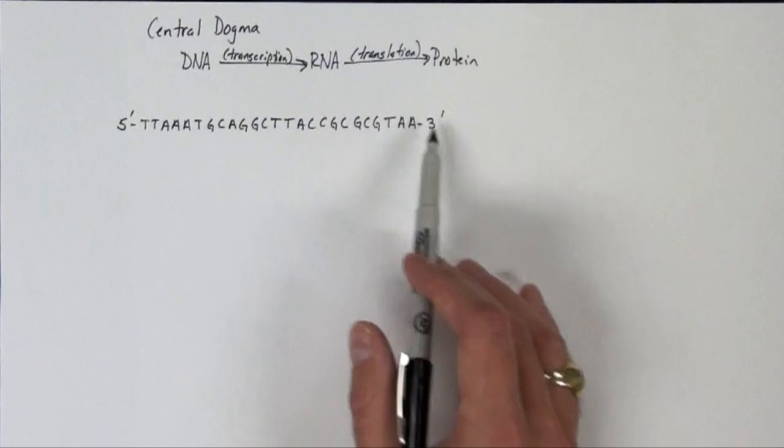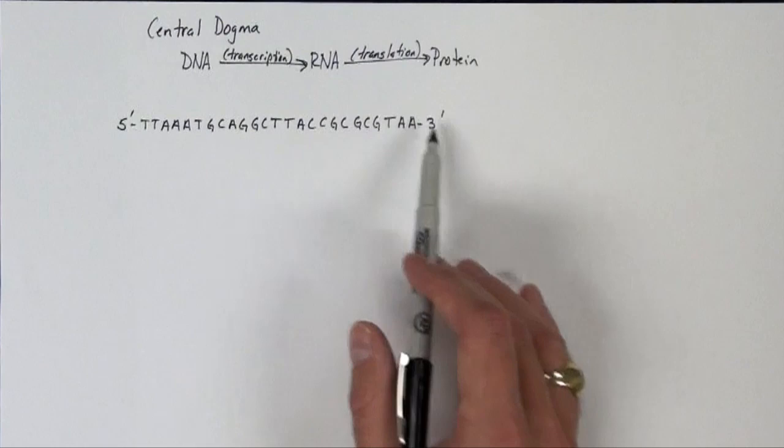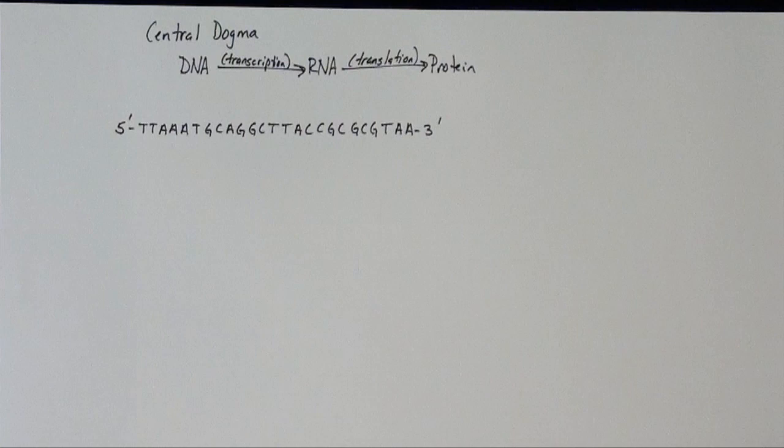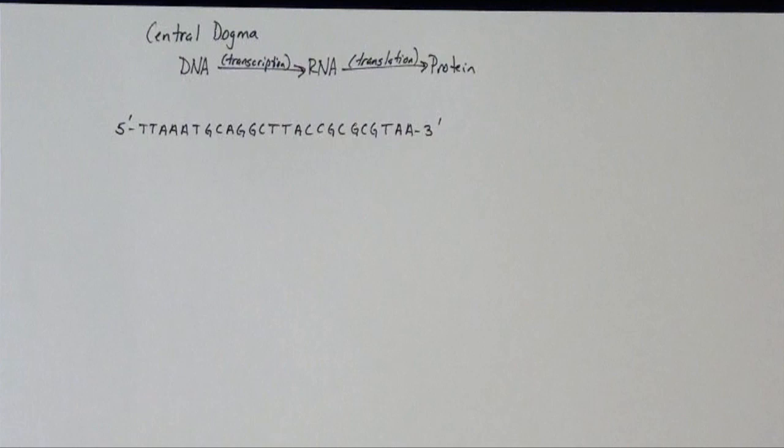So what I want to demonstrate to you is how that process occurs. So I just have a random piece of DNA here, and it's written in this 5' to 3' structure as typical nomenclature. And what I want to do is quickly make its complementary strand.